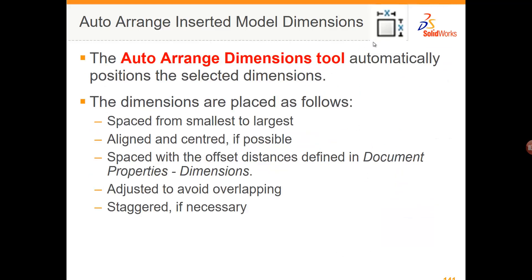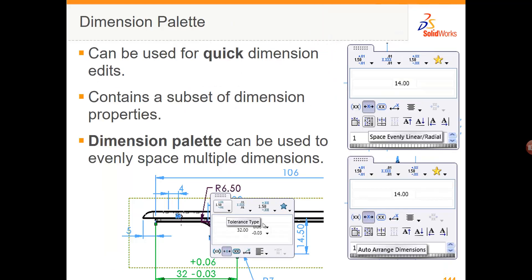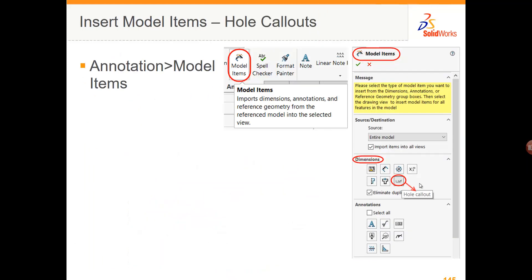The auto dimensions tool is a very convenient way of automatically organizing your imported dimensions — on the left you have the before and on the right the after of using this tool. The Dimension Palette has some other tools you can experiment with. You can also bring in Hole Callout — so if you've used the Hole Wizard for counterbore and countersink holes, you can bring those dimensions in using the Hole Callout tool.